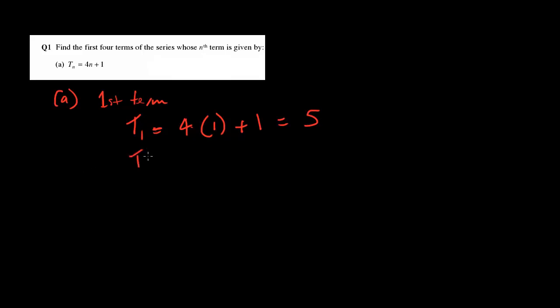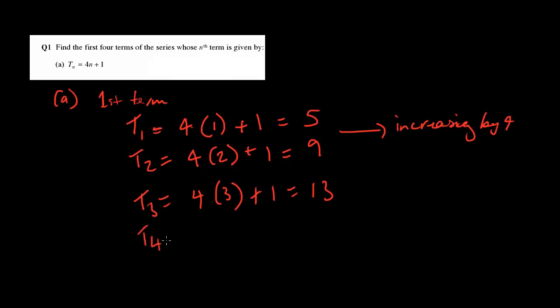For the second term, it would be just the same except the 1 gets replaced with the 2, because it's the second term, n standing for the second term. So then we get 9, and then so on. So 3, 4, so 12 plus 1 equals 13. So as you can see here, it's increasing by 4. So for the fourth one finally, 4 times 4 plus 1 equals 17. And that's pretty much it. That's how you do this question.